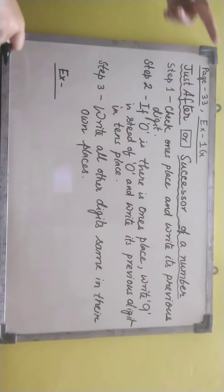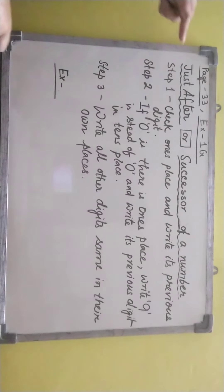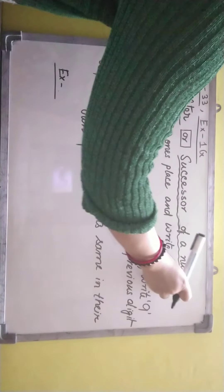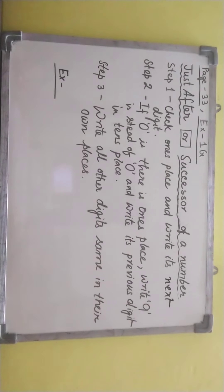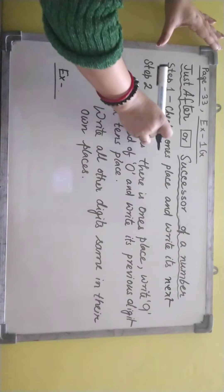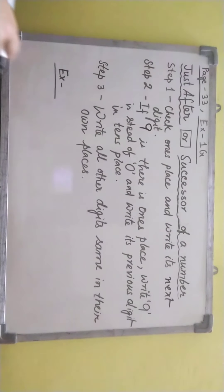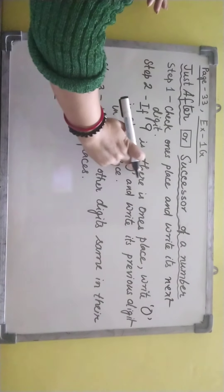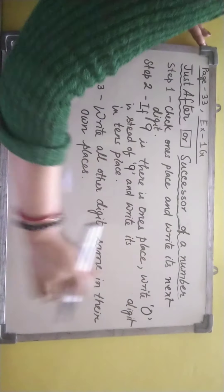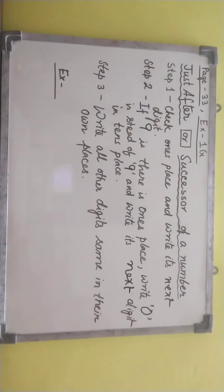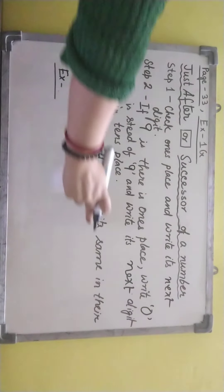Step 1: Check one's place and write its next digit — where in predecessor you wrote the previous digit, in successor you write the next digit. Step 2: If 9 is in one's place, write 0 instead of 9 and write its next digit in the tens place. Step 3: Write all other digits the same in their own places.